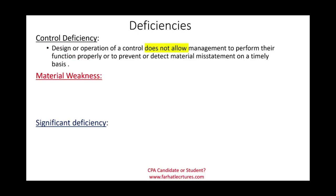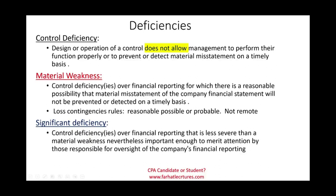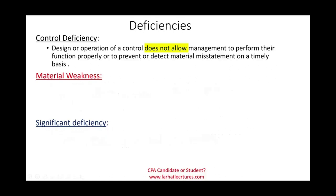What is a control deficiency? It is any problem in the design or the operation — remember we test the design or the operation — that does not allow management to reach its objective, which is functioning properly to prevent or detect material misstatement on a timely basis. Simply put, a control deficiency is something not working properly in internal control over financial reporting, either in the design or the operation.